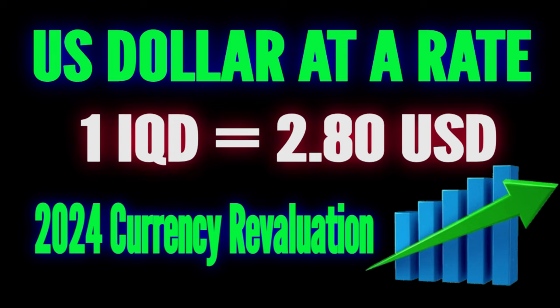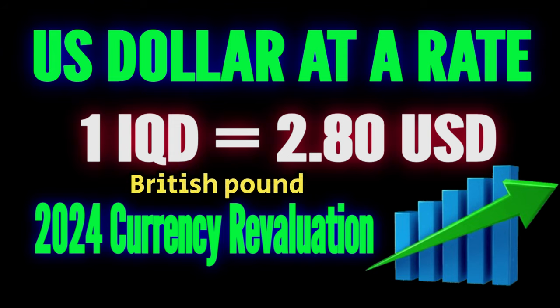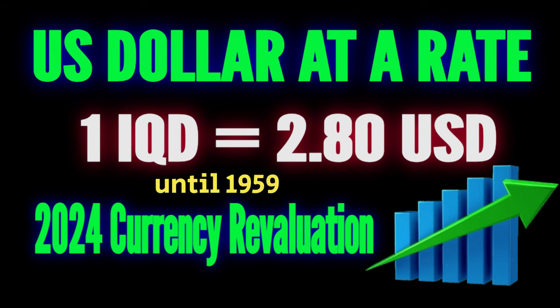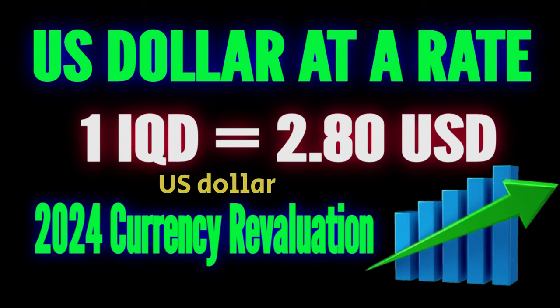Initially, the dinar was pegged to the British pound sterling until 1959, when it was re-pegged to the US dollar at a rate of 1 IQD equals 2 US dollars and 80 cents.